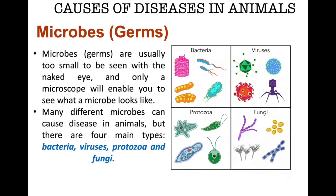Aside from parasites, there are also the so-called microbes or germs. They are usually too small to be seen with the naked eye and only a microscope will enable us to see what a microbe looks like. Some microbes are harmless — for example, bacteria that surround animals and people, living in our skin and inside our nose, mouth, and stomach. Some microbes are even helpful, such as the ones in our gut which help us digest food. Many different microbes can cause disease in animals, but there are four main types: bacteria, viruses, protozoa, and fungi.